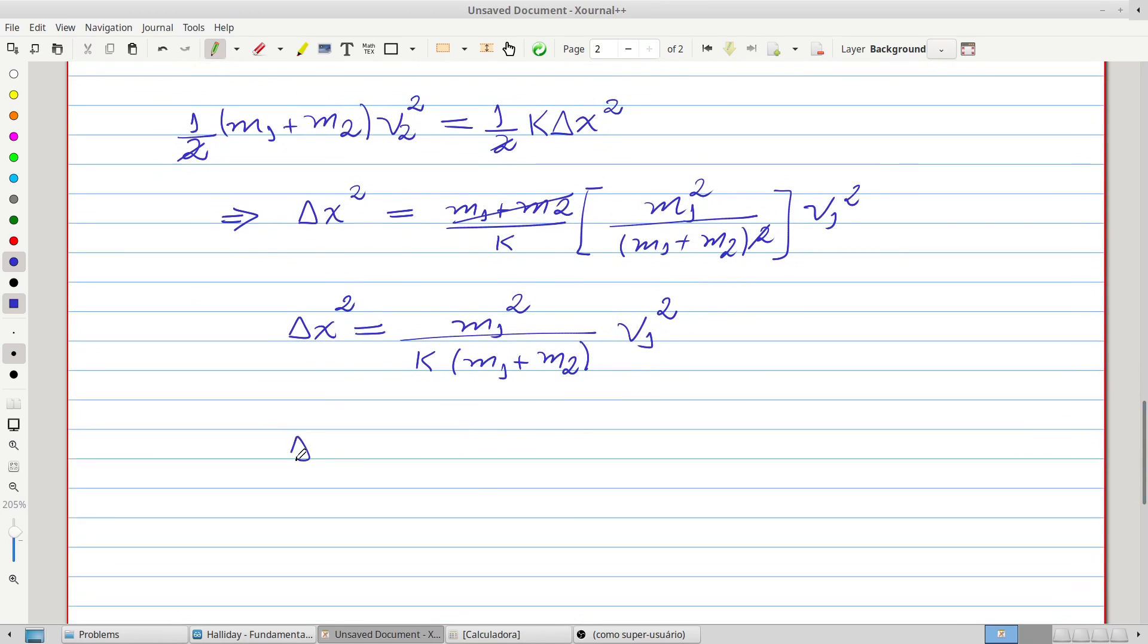Therefore we will have M1 divided by, let's do it better, divided by the square root of K multiplied by M1 plus M2, multiplied by V1. Here is the solution of the problem.